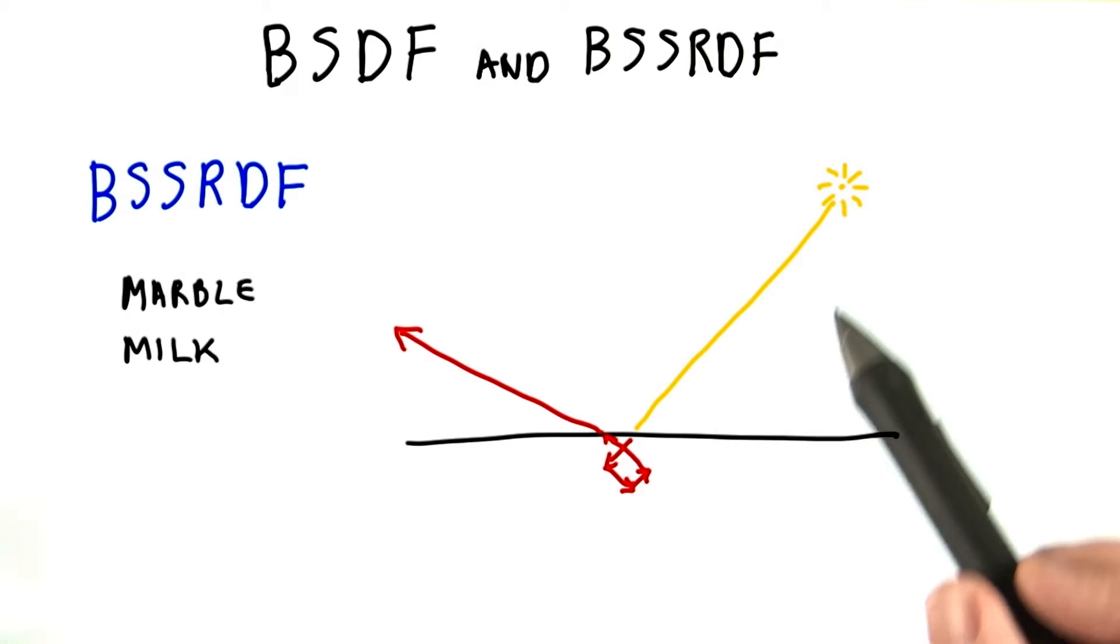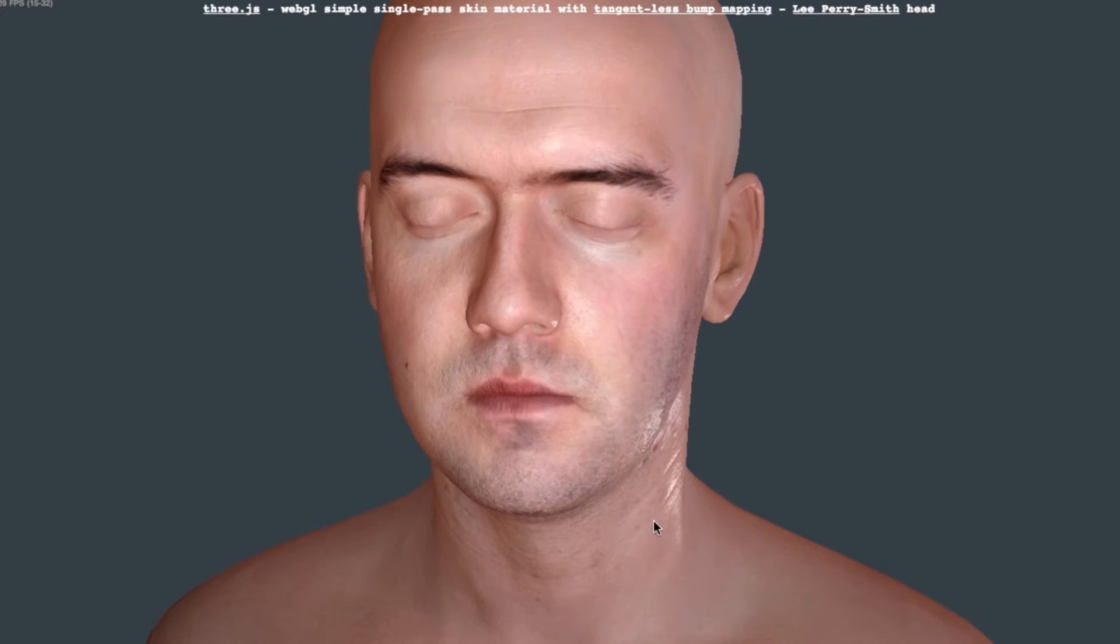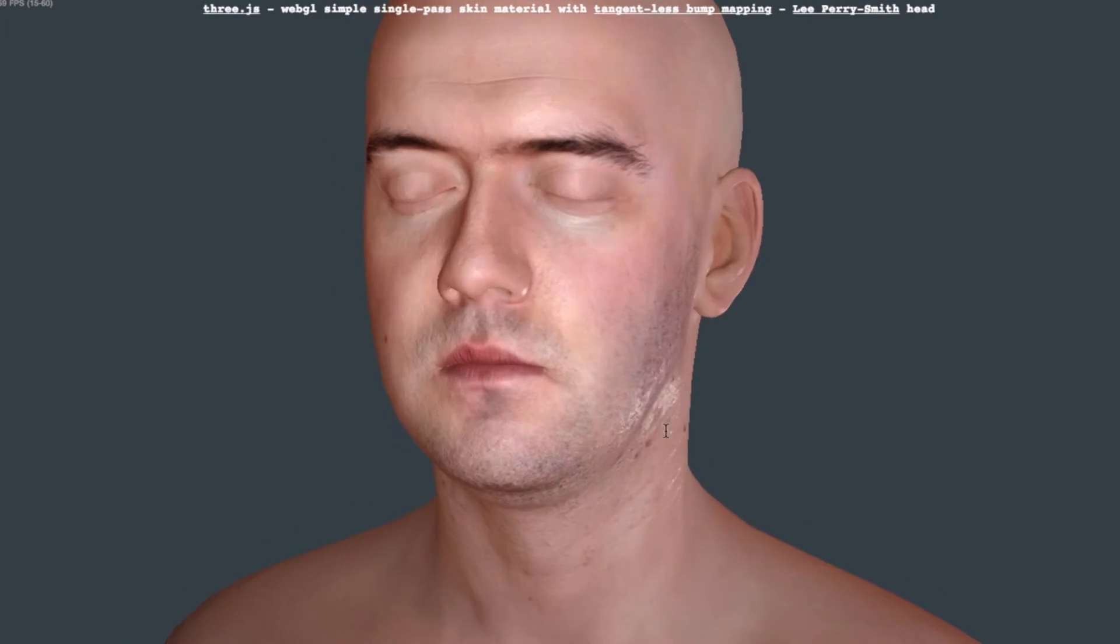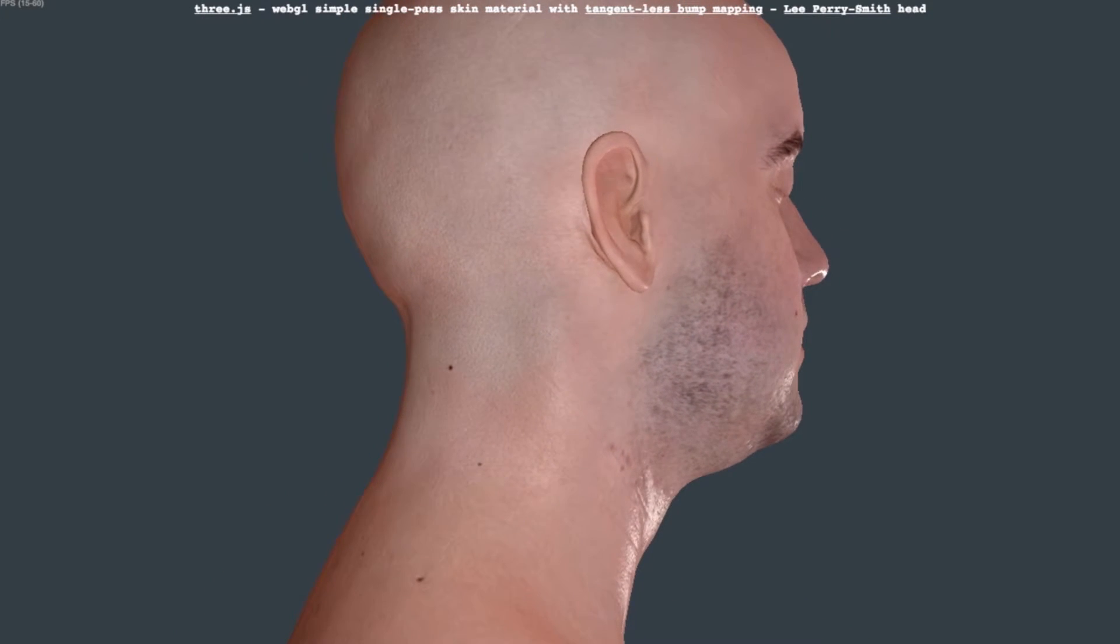For these materials in particular, the light enters one location on the surface, bounces around inside the material, and comes out somewhere nearby. One other extremely important material that has this sort of scattering is skin. Getting skin to look good for interactive rendering can be quite involved, but the results are more convincing than using some simple reflection model.